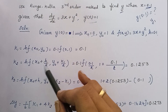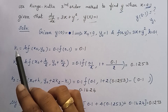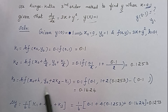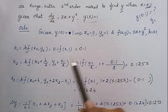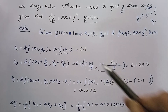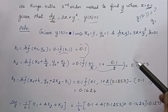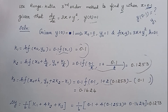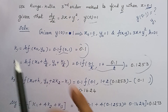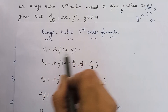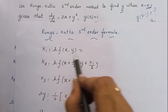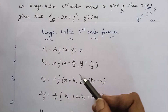I will substitute the values in this formula. We will use the ordinary method. Just to calculate the formula, we store K1, K2, and K3. We use the K1 formula to calculate the K1 value.